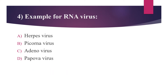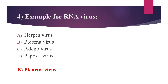Fourth question: an example of an RNA virus. Option A: herpes virus. Option B: coxsackievirus (enterovirus). Option C: adenovirus. Option D: papovavirus. The answer is option B, coxsackievirus. Many human pathogenic viruses belong to the enterovirus family. This important family of RNA viruses includes poliovirus, coxsackievirus, and echovirus.